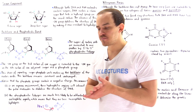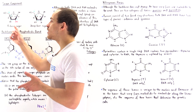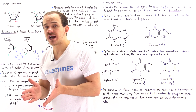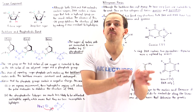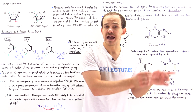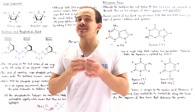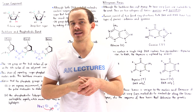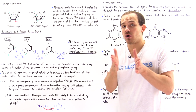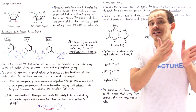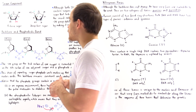RNA contains the ribosugar, and that's why we call RNA ribonucleic acid. On the other hand, DNA contains the deoxyribosugar, and that's exactly why we call DNA deoxyribonucleic acid.